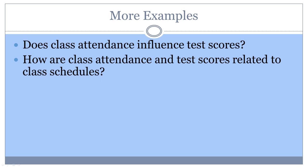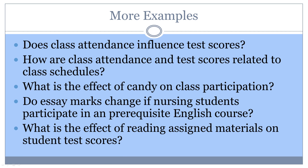In the next question, how are class attendance and test scores related to class schedules? The variables that are assumed to change include both class attendance and test scores. Therefore, both of these variables are dependent. There are a couple of messages to take from this example. First, research questions may include many variables, not just one independent and one dependent variable. Second, whether a particular variable, like class attendance, is independent or dependent may change depending on the role it plays in any given study. Please pause this video and see if you can identify the type of variable in the rest of the examples on your own and comment below.